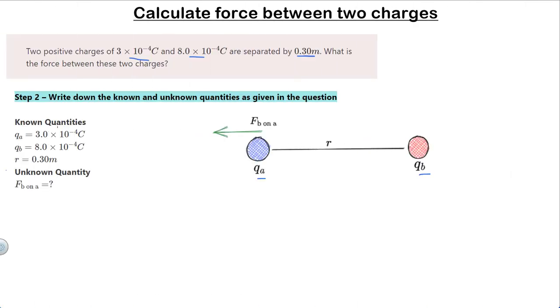In our next step, we would write down the known and unknown quantities as given in the question. Charge QA equals 3.0 into 10 to the power minus 4 coulombs, charge QB equals 8.0 into 10 to the power minus 4 coulombs, and the distance between these two charges is 0.3 meter. Our unknown quantity is F, which is the force on charge QA due to charge QB.